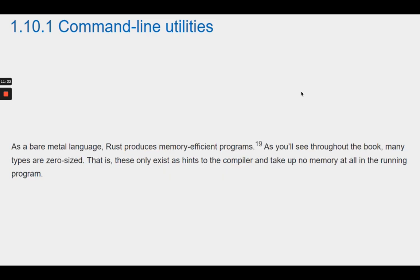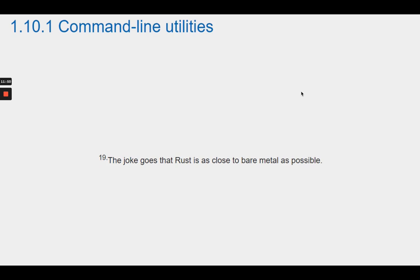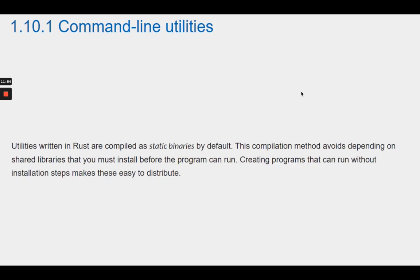As a bare-metal language, Rust produces memory-efficient programs. Many types are zero-sized — these only exist as hints to the compiler and take up no memory at all in the running program. Utilities written in Rust are compiled as static binaries by default. This compilation method avoids depending on shared libraries that you must install before the program can run. Creating programs that can run without installation steps makes these easy to distribute.